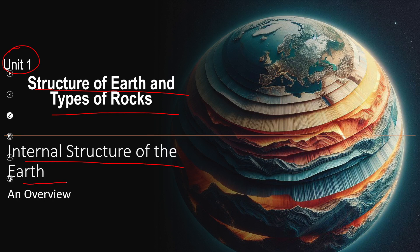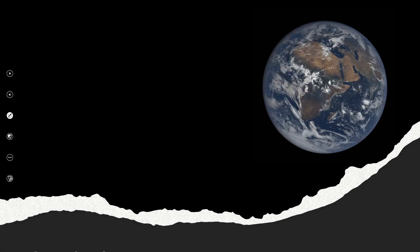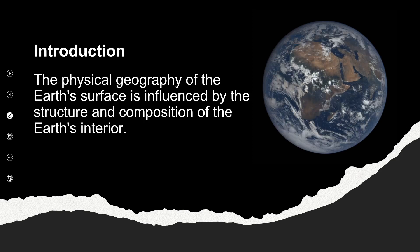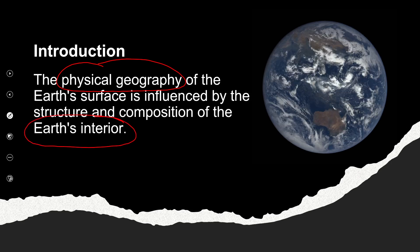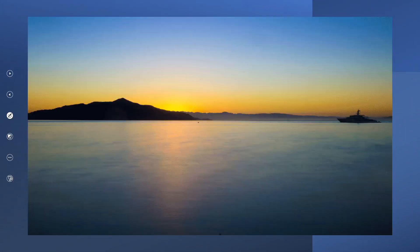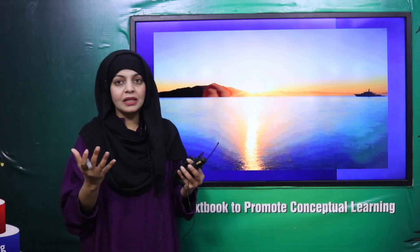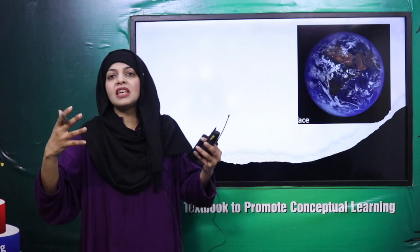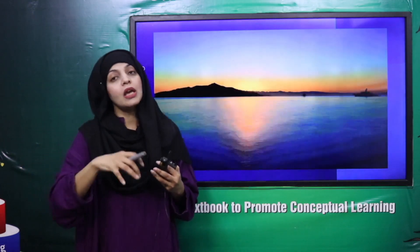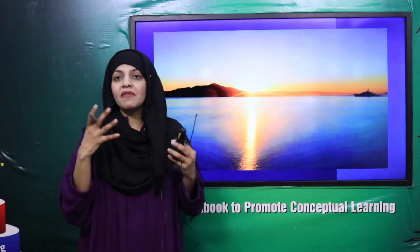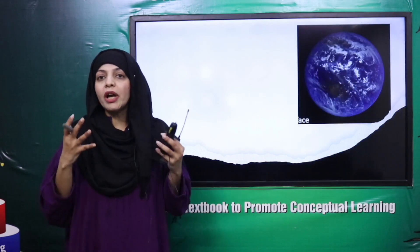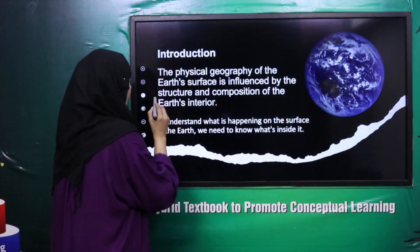This is from Unit 1: Structure of the Earth and Types of Rocks. We will have a complete overview of the internal structure of the earth. Your earth looks like this from the outside. Deep down, the earth's interior has to do with everything you see on top. Whatever you see on top - mountains, oceans, seas - everything is because of what is inside the earth. All the physical geography features like mountains, plains, seas, and oceans exist because of what is beneath the surface.